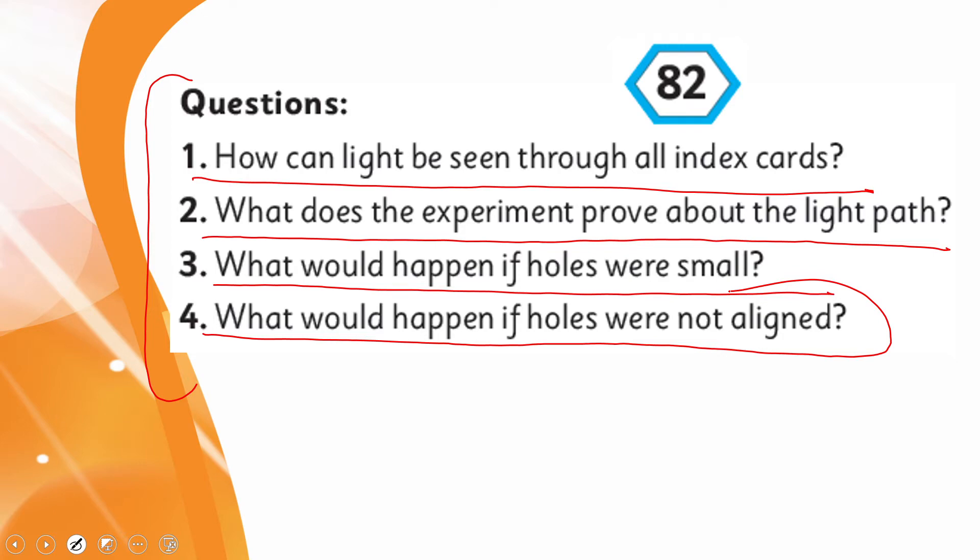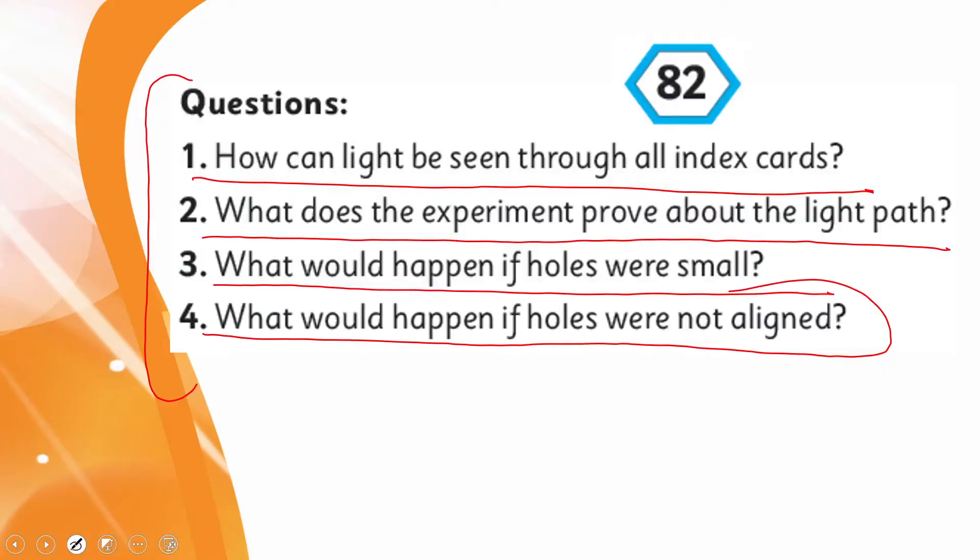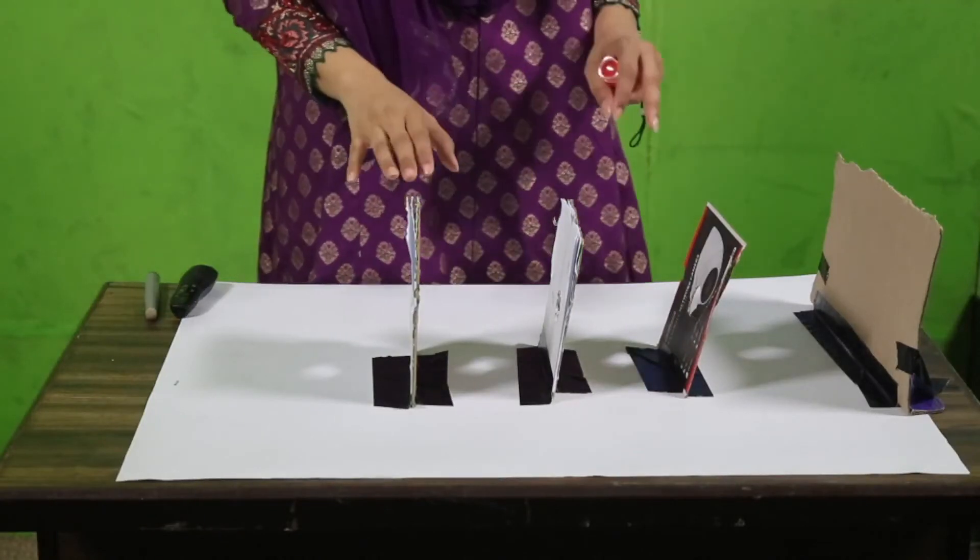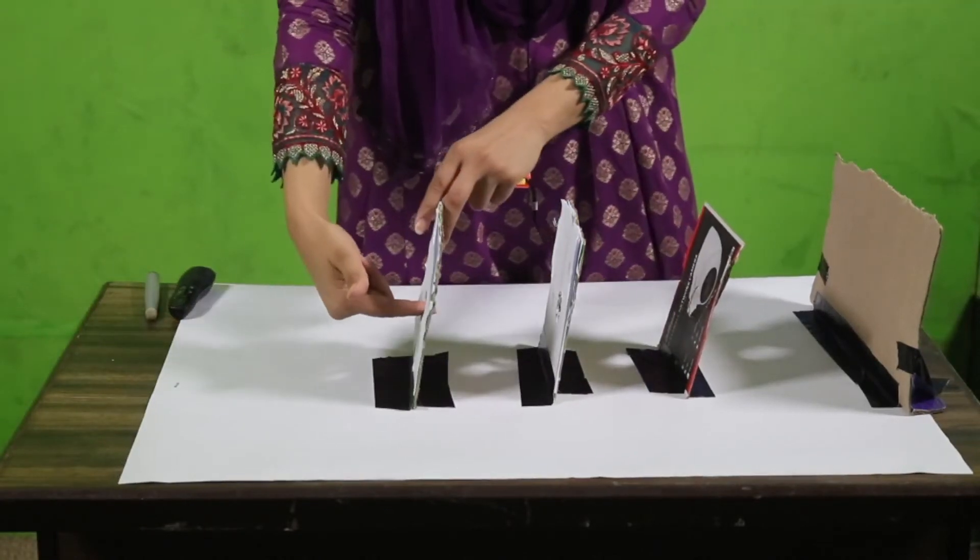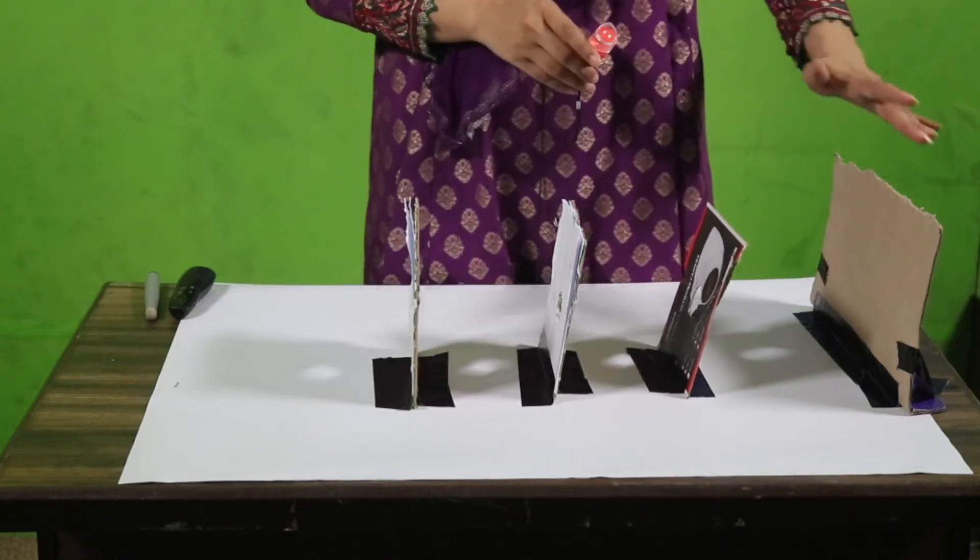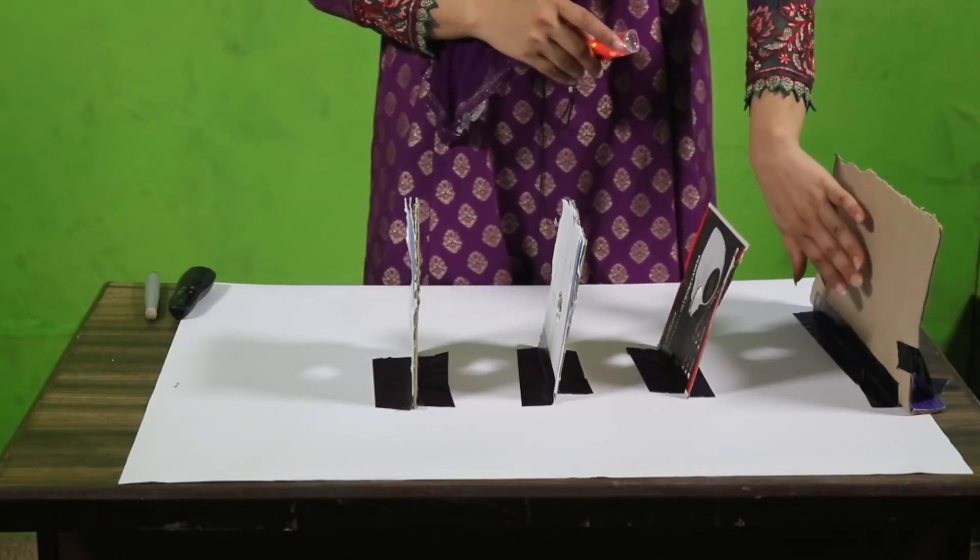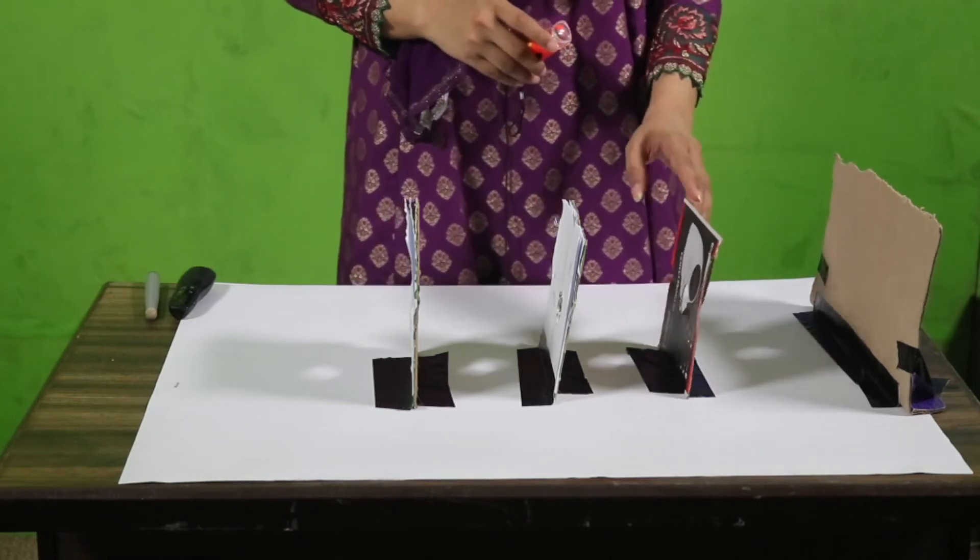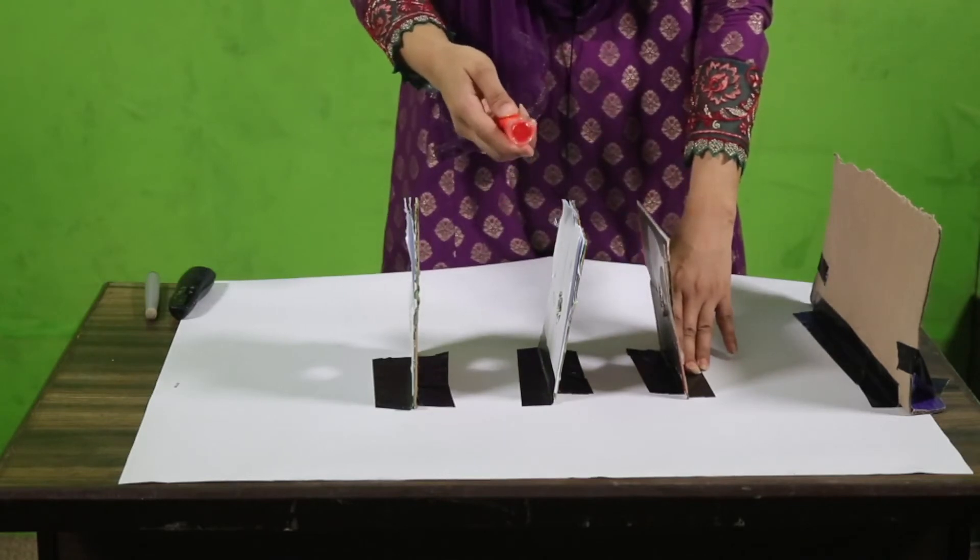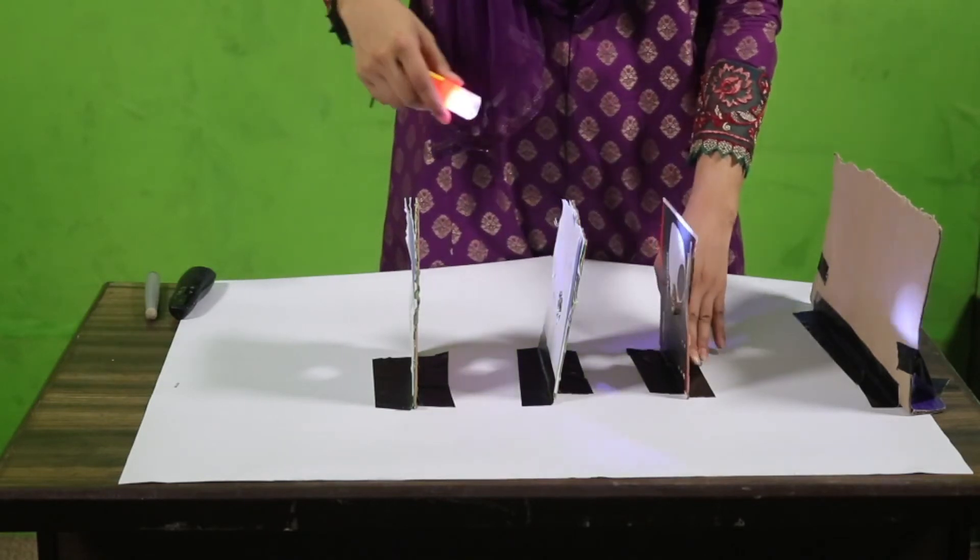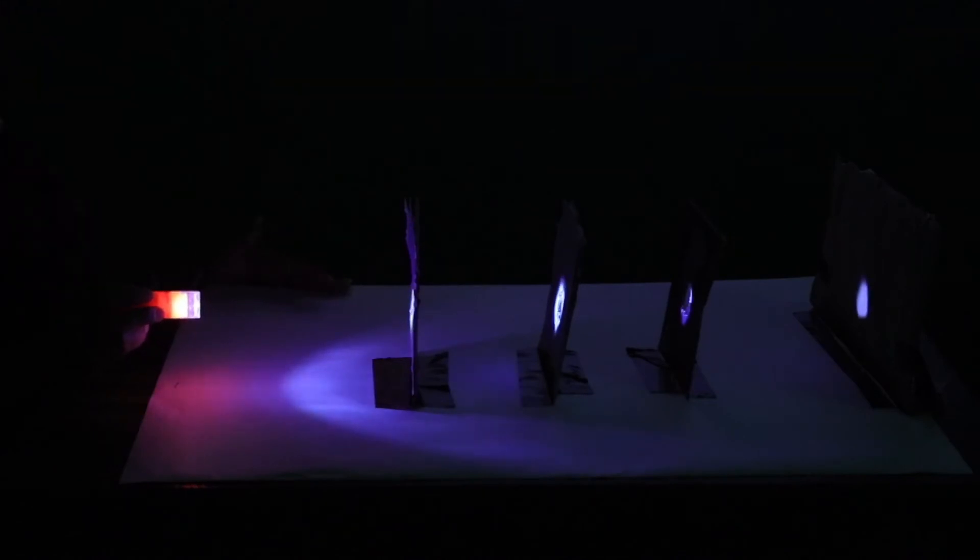You need a flashlight and cards, and we will make the holes in the center. Here you can see the cards. I made equal holes in the center of all of them, and at the last I have placed a cardboard without a hole so that when light falls on it, you will see that the light is traveling in a straight line. I have the flashlight here. I will turn it on, switch off the lights, and we will see.